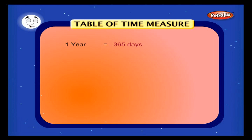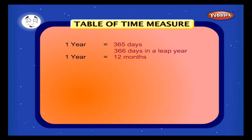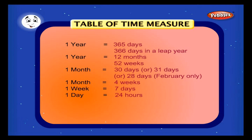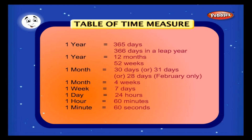Table of time measure: we have 365 days in a year, but once in four years we have 366 days, and that year is called the leap year. In one year we have 12 months and 52 weeks. In one month we have 30 days in some months, 31 days in some months, and 28 days for February. In one month we have four weeks, in one week we have seven days, in one day we have 24 hours, in one hour we have 60 minutes, in one minute we have 60 seconds.